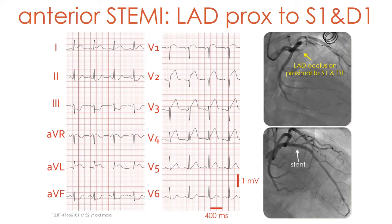This is another example of a STEMI due to an acute total occlusion of the LAD proximal to both the first septal and the first diagonal branches. The electrocardiogram shows ST segment elevation in leads V1 to V4 and also in leads AVR and AVL. The ST segment is depressed in leads 2, 3, and AVF, but also in lead V6. The coronary arteriography demonstrated that the left anterior descending coronary artery was occluded proximal to both the first septal and the first diagonal branch. Below we show the coronary arteriography after stenting the occlusion.